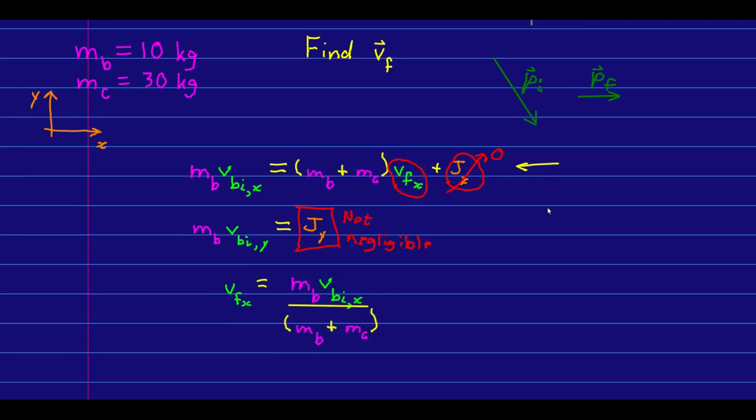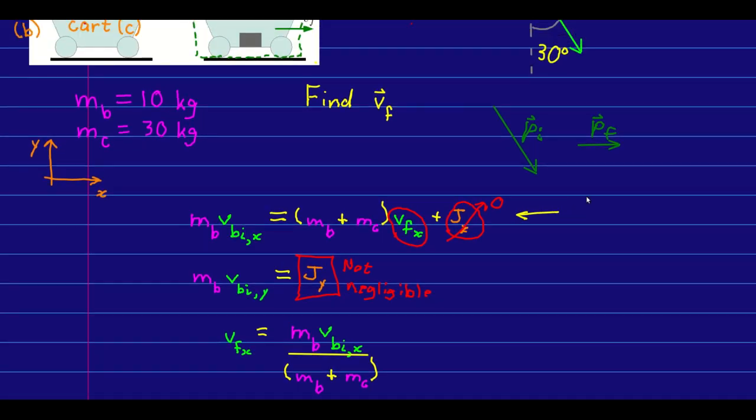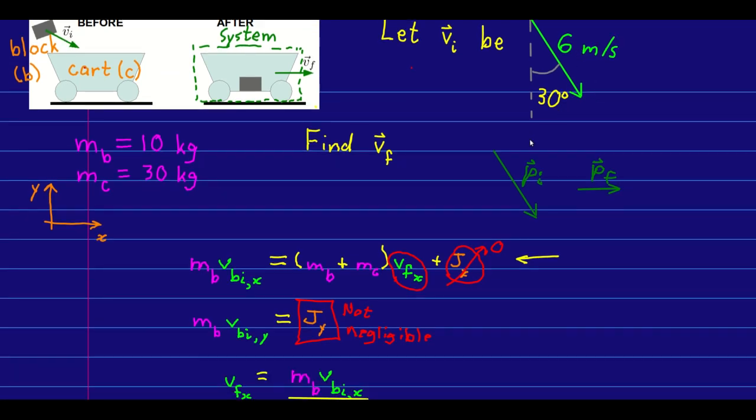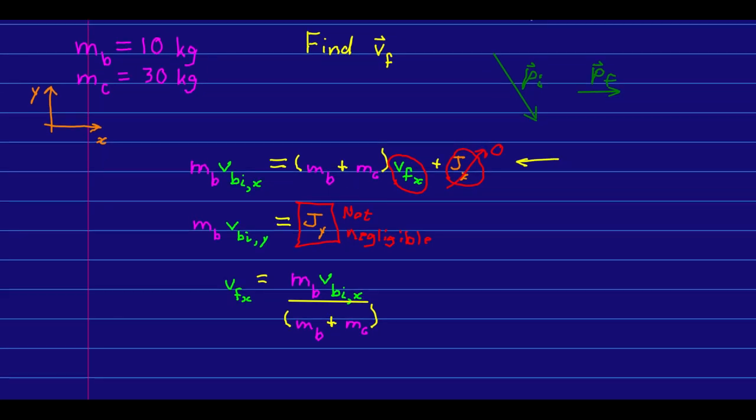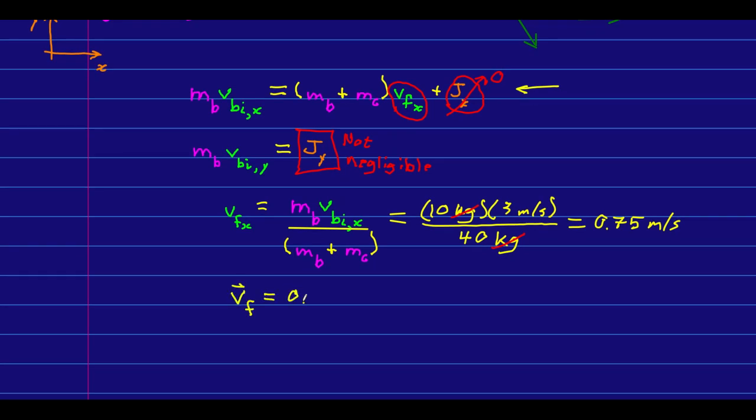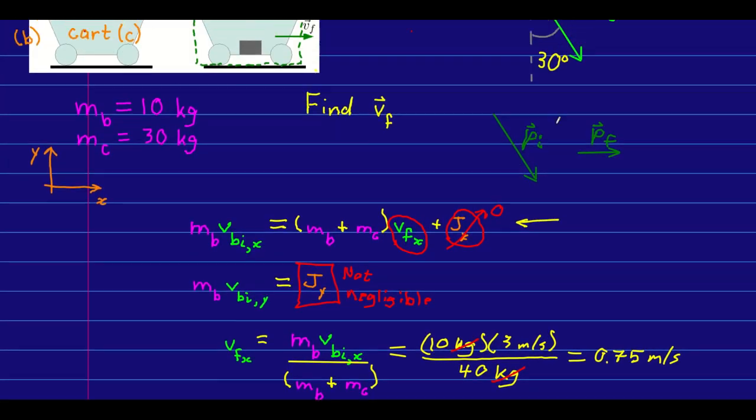Now the only thing left to do is put in numbers and get a final answer. Hopefully you can do the trig and see that the x component of the block's initial velocity is three meters per second. And so in the end, what we have is this. We can write the final velocity. And we expected it to be smaller than what we started with, and so this makes sense.